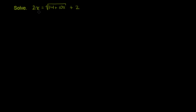We're asked to solve 2x equals the principal square root of 14 plus 10x, plus 2. Whenever you see one of these equations that have a variable under the radical sign, what you want to do is isolate the radical sign and then square both sides to get rid of it.